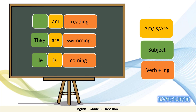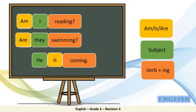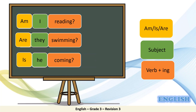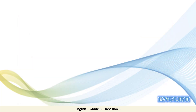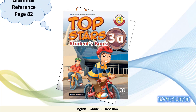What if we want to ask someone about what's happening right now? Yes, you're right. We just start with the helping verb 'to be'. Am I reading? Are they swimming? Is he coming? And never forget the question mark, my smart students. You will find more details and examples in your student's book, page 82, the grammar reference.